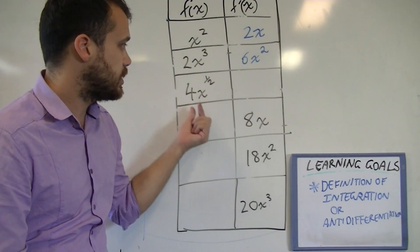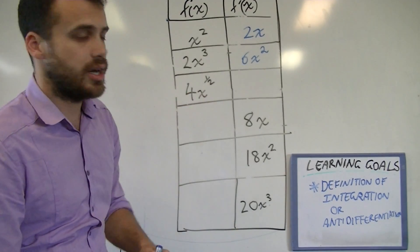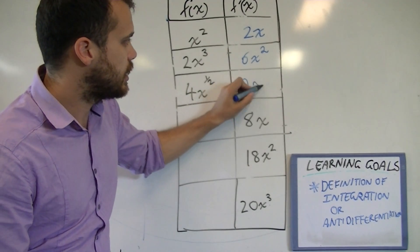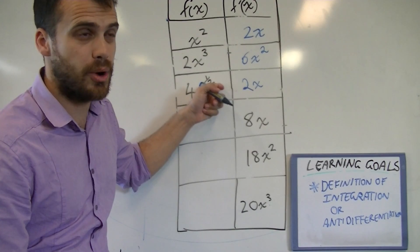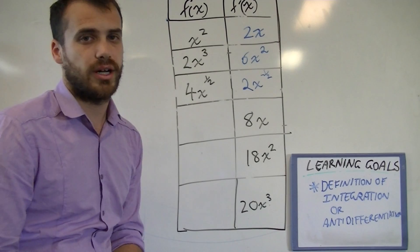Now this last one here, 4x to the half, a little more difficult but same idea. 4 times a half is 2x to the half minus 1, which makes a negative half. 2x to the negative half.